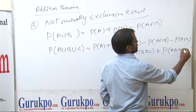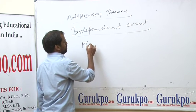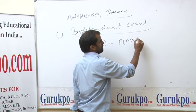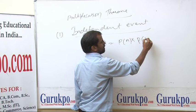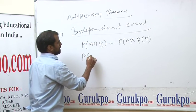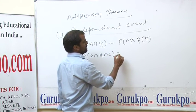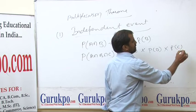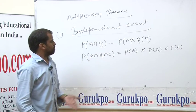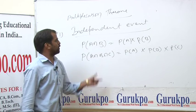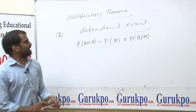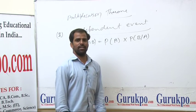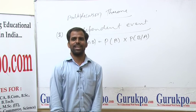Multiplication theorem for independent events: P(A∩B) = P(A) × P(B). For 2 or more events: P(A∩B∩C) = P(A) × P(B) × P(C). For dependent events: P(A∩B) = P(A) × P(B|A), where P(B|A) is the conditional probability of B given A has occurred.